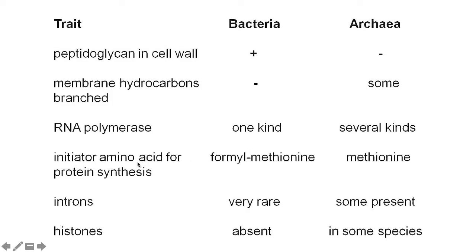Regarding initiation: the first amino acid in bacteria is f-met, but in archaea it's methionine, just like in eukaryotes. Bacteria very rarely have introns - their genes are in the right sequence. With archaea there are introns, and you have to splice them out.